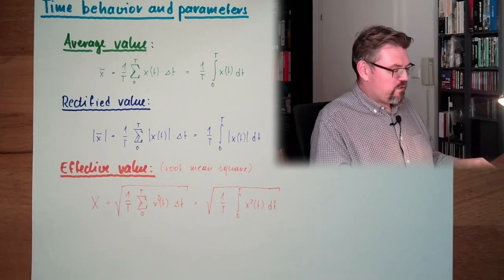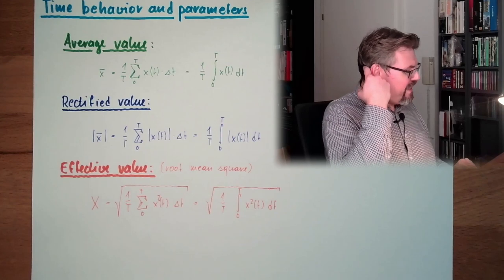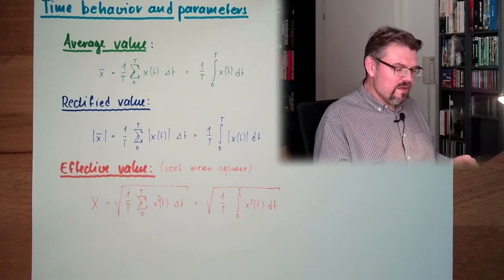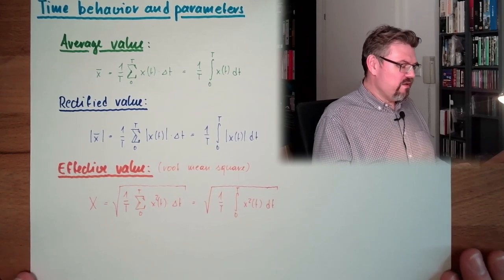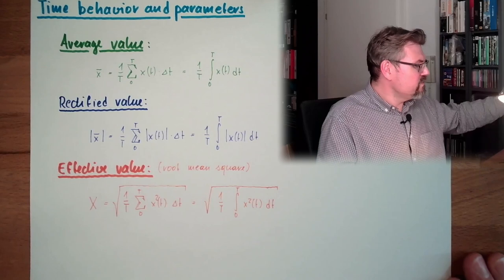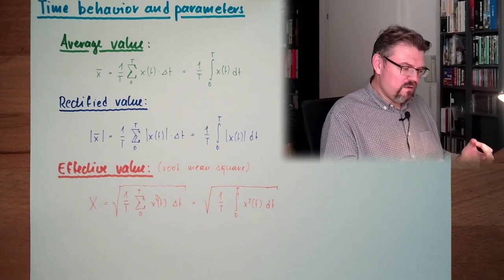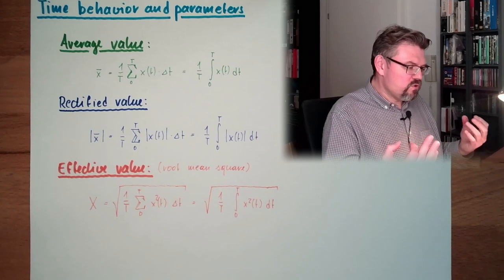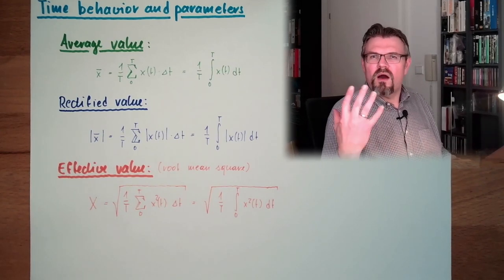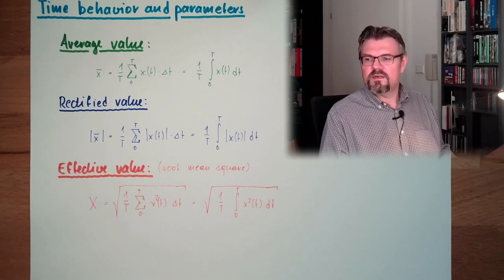For every function it would look like this using that integral formula for the effective value. This tells how effective the signal is. For example, here we say we have 230 volts inside — those 230 volts are the effective value, the root mean square. And this is as effective — as powerful — as 230 volts of direct current would be.